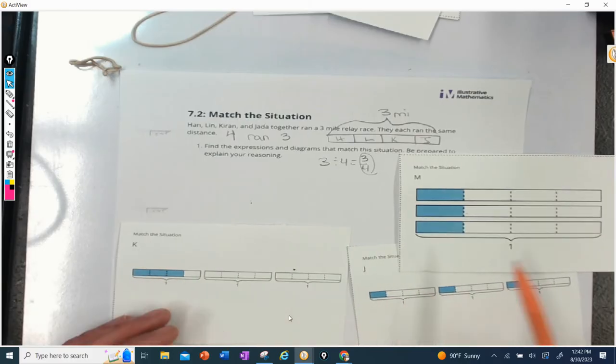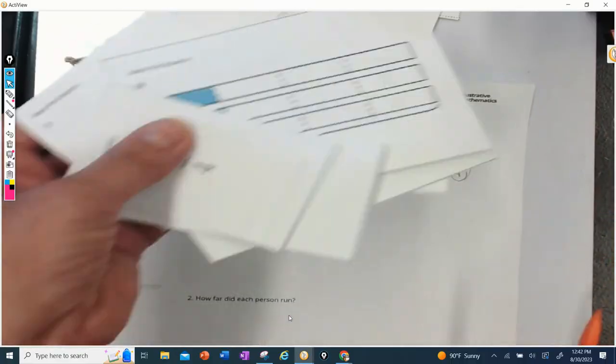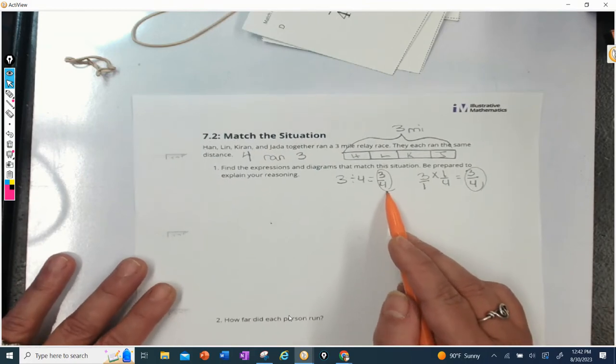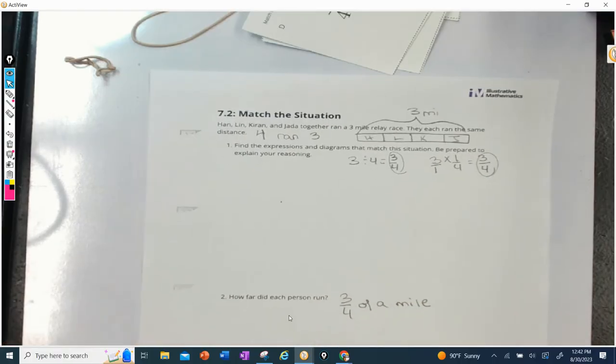So there was our first one. So now we have to say how far did each person run? Well, we've already kind of solved that. Each person ran three fourths of a mile. So let's go back to our slideshow. Since we solved that, let's see what else they have for us.